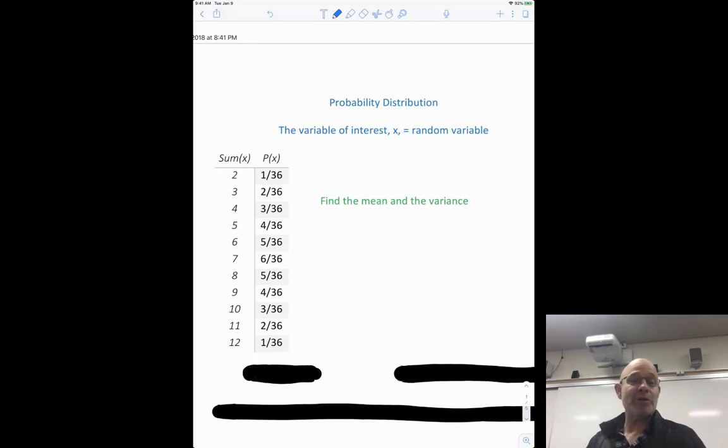So this is a probability distribution. We're going to use x, P of x a lot in this class. The variable of interest is x, called a random variable. This is a probability distribution for rolling two dice and adding them up. We've done this one before, way back in the beginning. Chapter 6 sums 2, 3, 4, 5, 6, 7, 8, 9, 10, 11, 12, and their corresponding probability. This is just kind of a review right now.